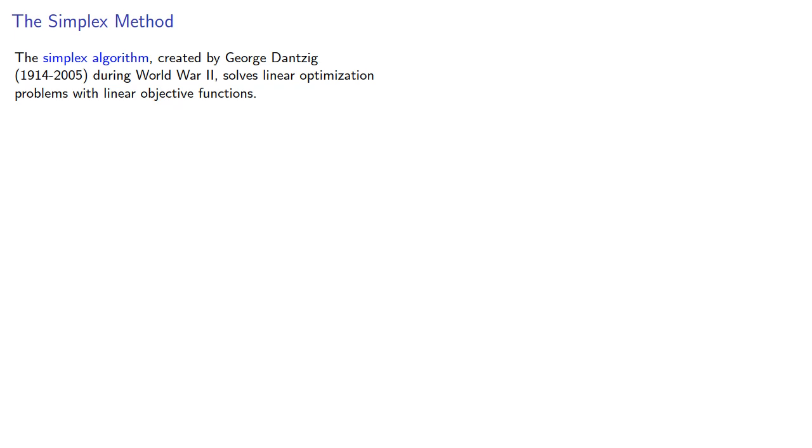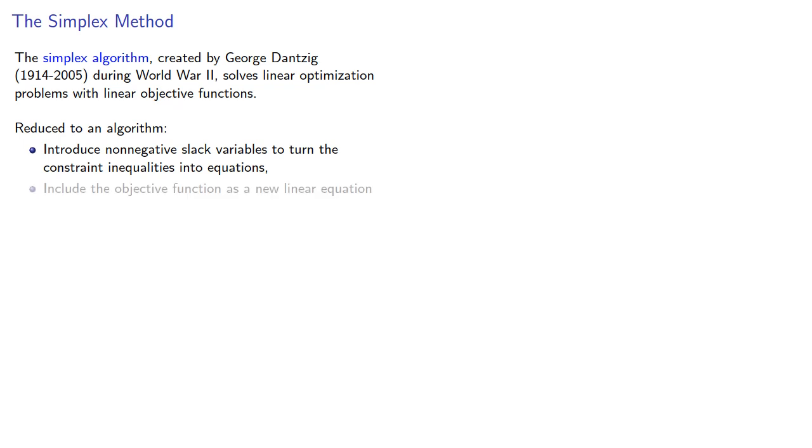The simplex algorithm created by George Danzig during World War II solves linear optimization problems with linear objective functions. Reduced to an algorithm, we introduce non-negative slack variables to turn the constrained inequalities into equations, include the objective function as a new linear equation. This produces a tableau.